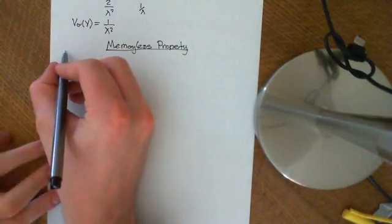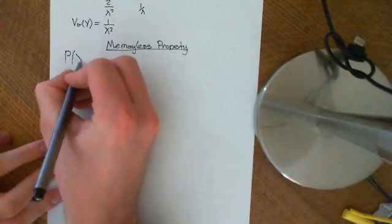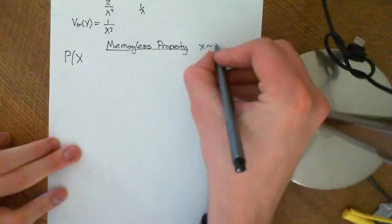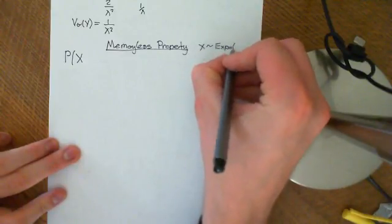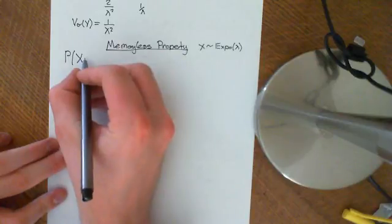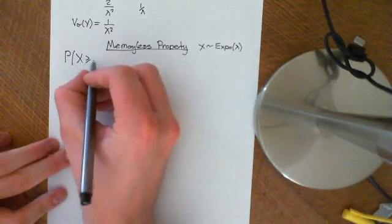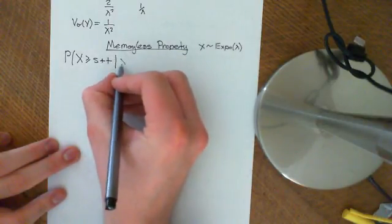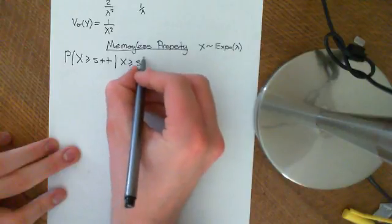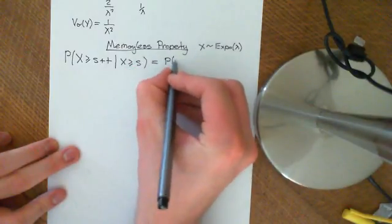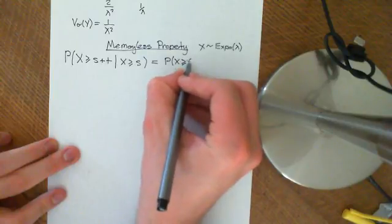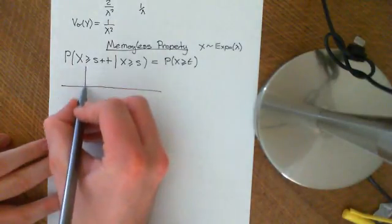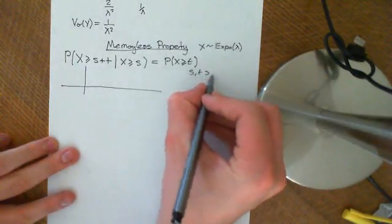The memoryless property is that if x is some random variable distributed exponentially with parameter lambda, then the probability that x is greater than or equal to s plus t, given that x is greater than or equal to s, is equal to the probability that x is greater than or equal to t. Note that s and t are both positive real numbers.